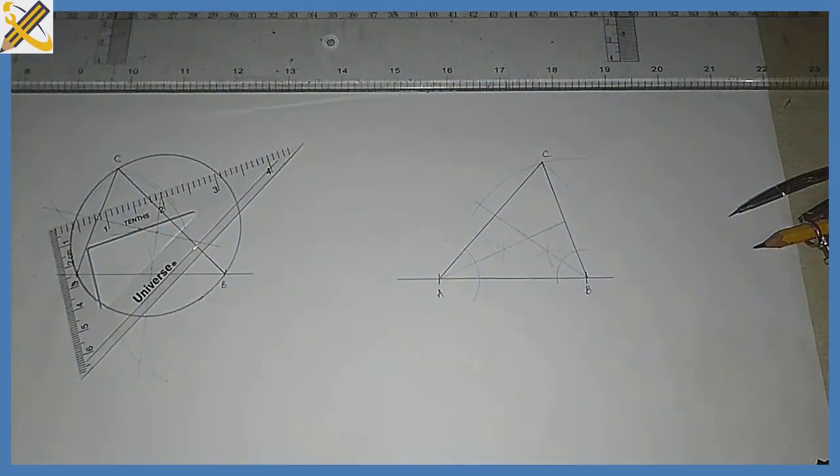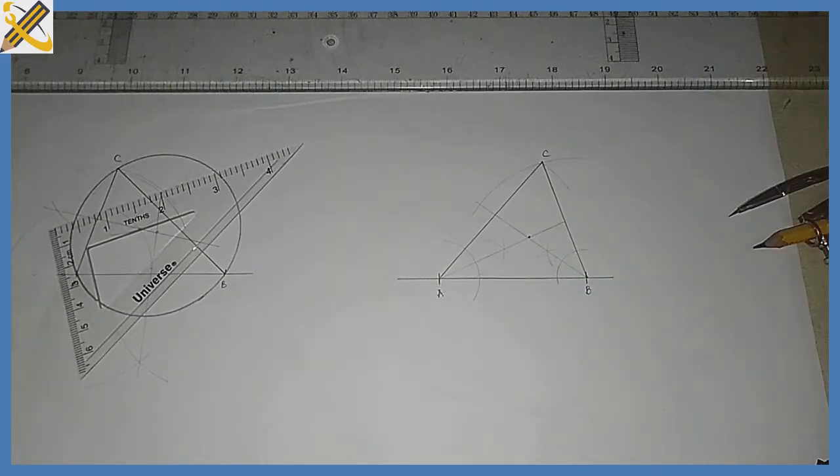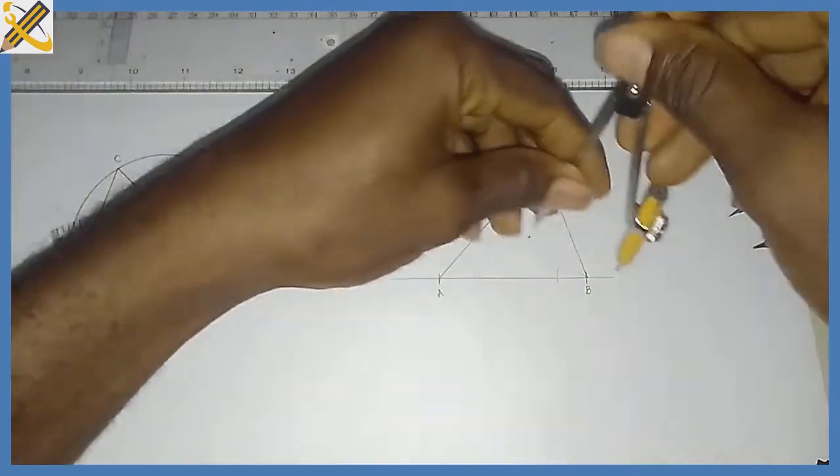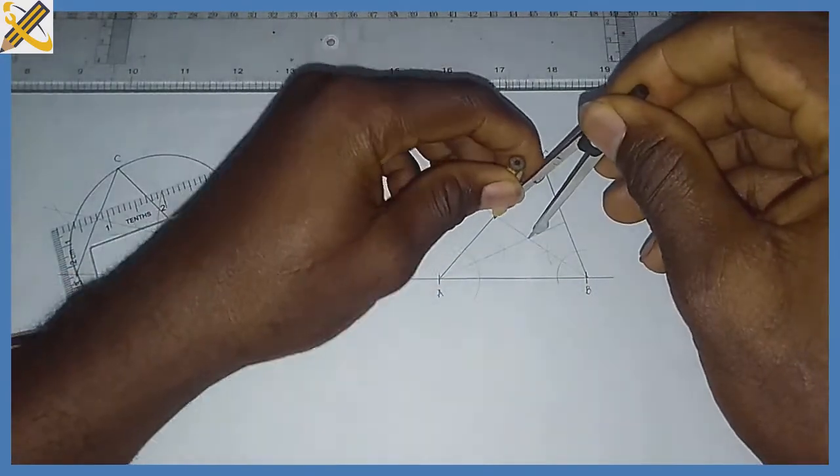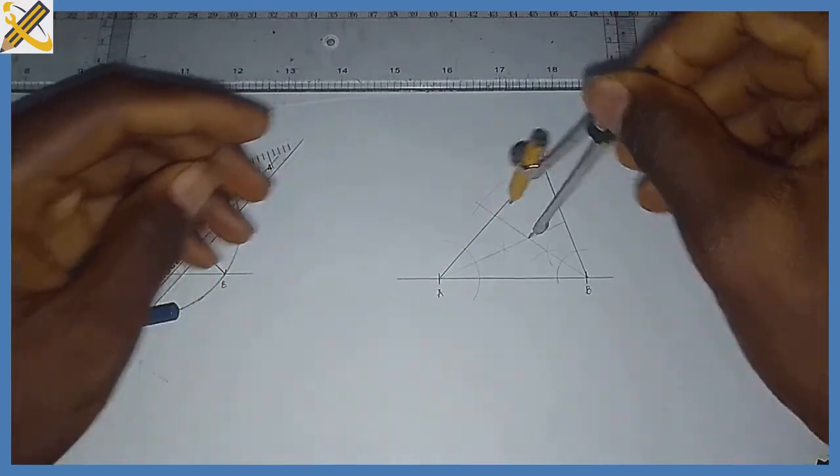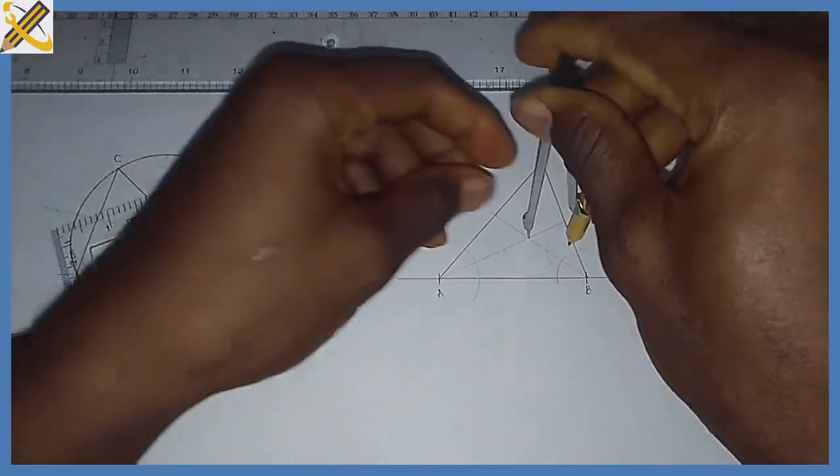Alright, so those are the two bisectors. They meet at this junction. From that junction where they meet, I'm going to place my compass at that junction, then extend the compass to any of the sides.